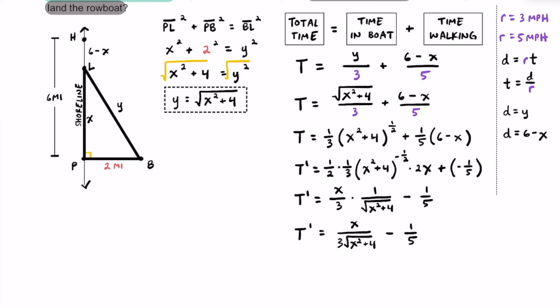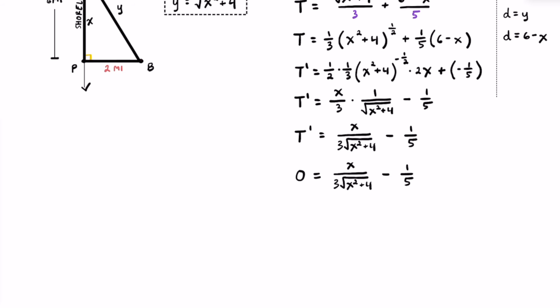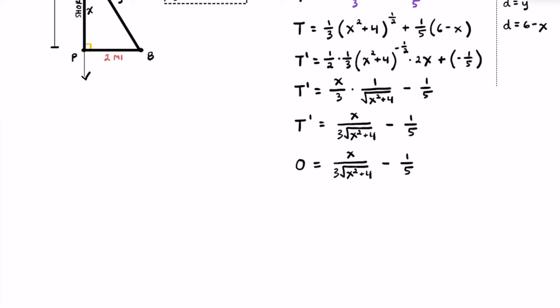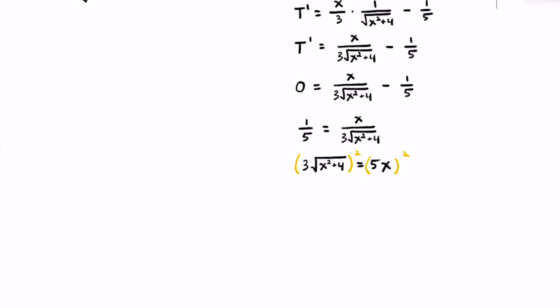Now that we have the derivative, let's optimize and find the least amount of time. We set this equal to zero — we want to find when the derivative equals zero, which will optimize what we're talking about. Adding one fifth to both sides, we get one fifth equals X over three times the square root of X squared plus four. Cross multiplying gives us three times the square root of X squared plus four equals five X. Squaring both sides, nine times the quantity X squared plus four equals 25 X squared.